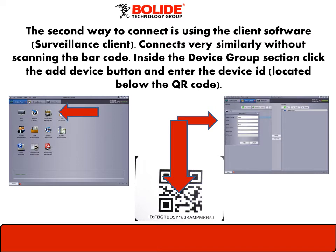The second way to connect is using the Client Software, the Surveillance Client. We'll be using the same sticker located on the DVR, but this time we'll have to manually type in the ID located right below the QR code.